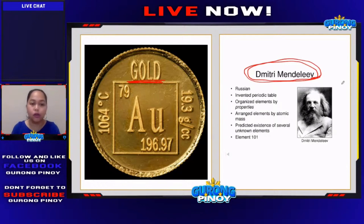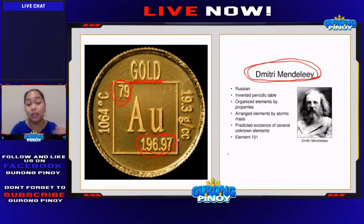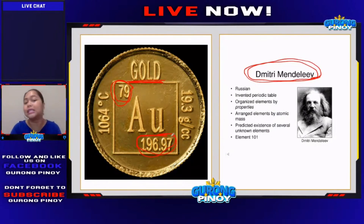Whenever you see or you are looking at your periodic table, you see the different element symbols, the element name, and usually there are numbers here. For example, with gold there is the number 79 and the number 196.97. Remember: whatever is the higher number, the higher number is always the atomic mass.